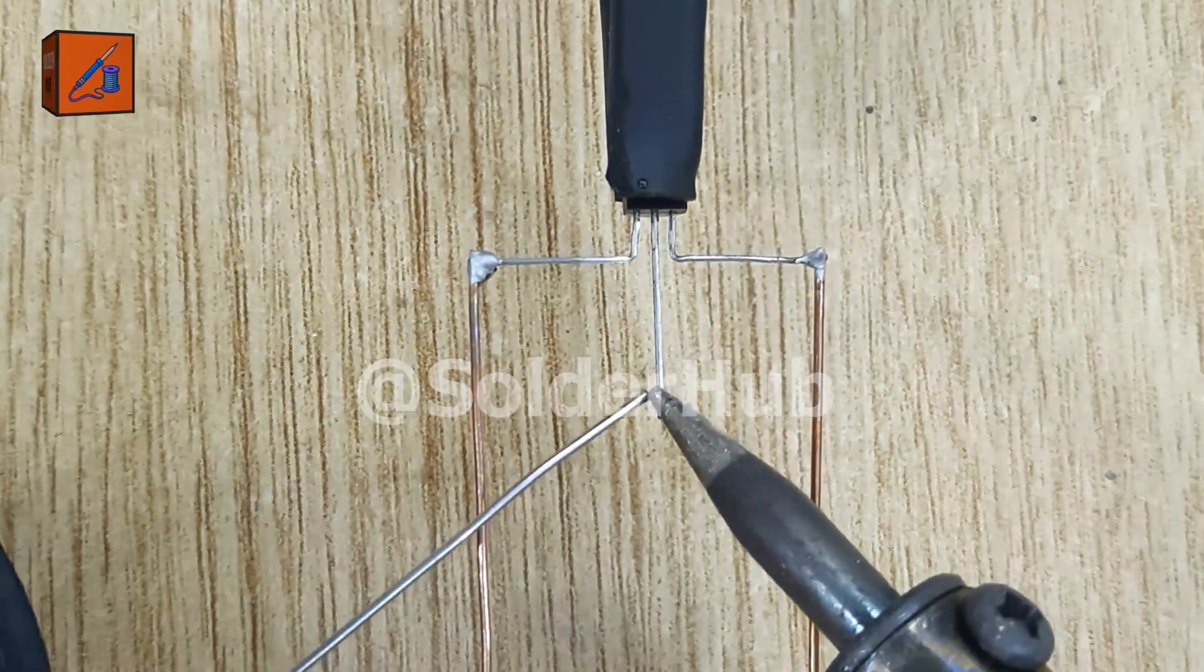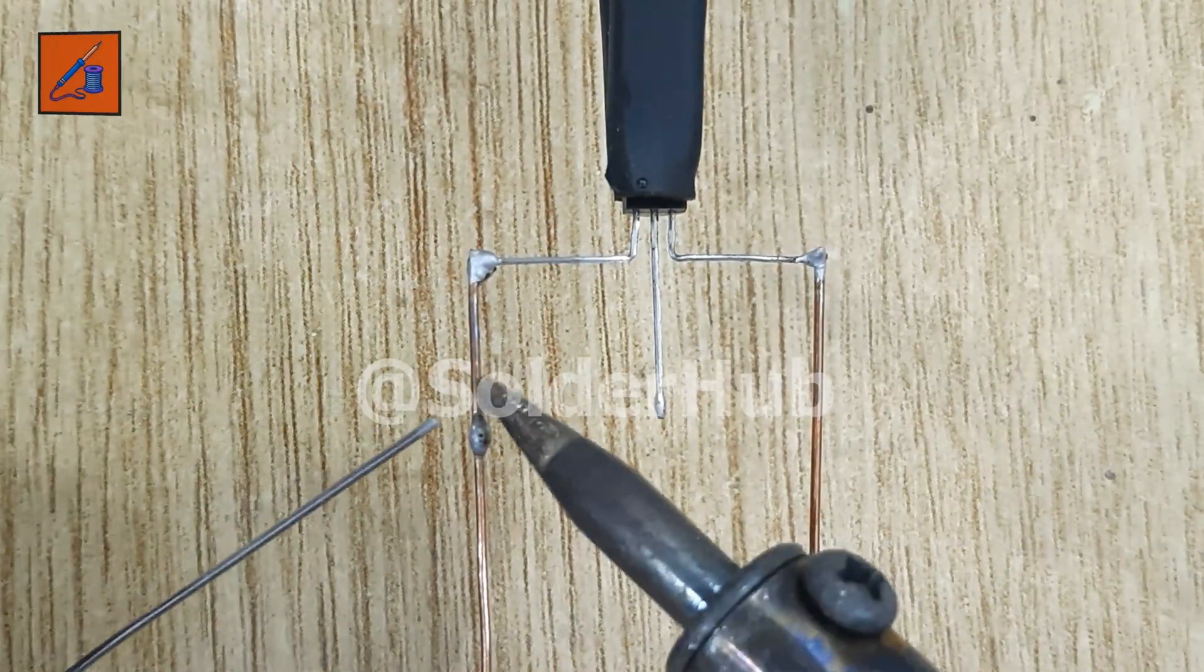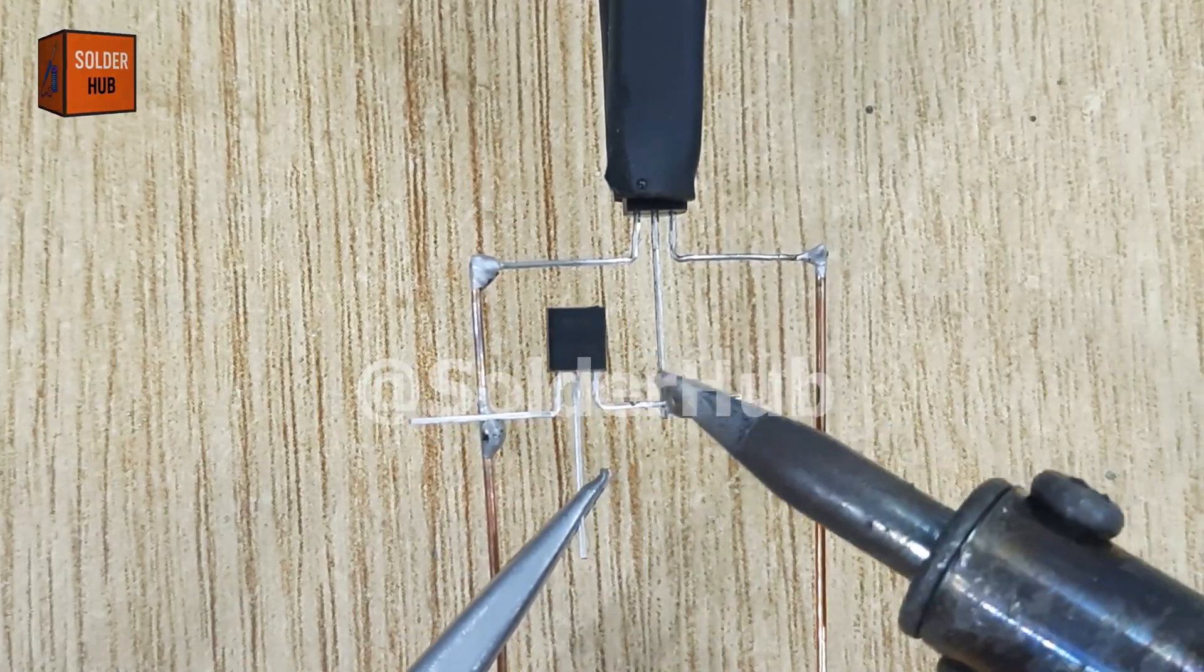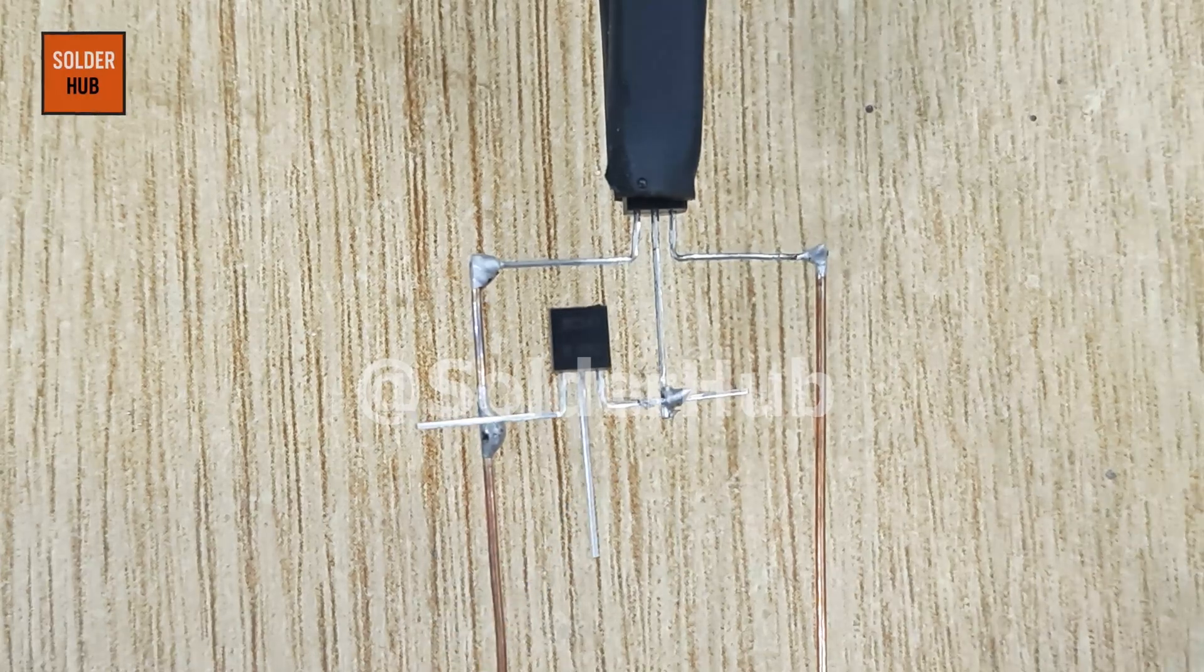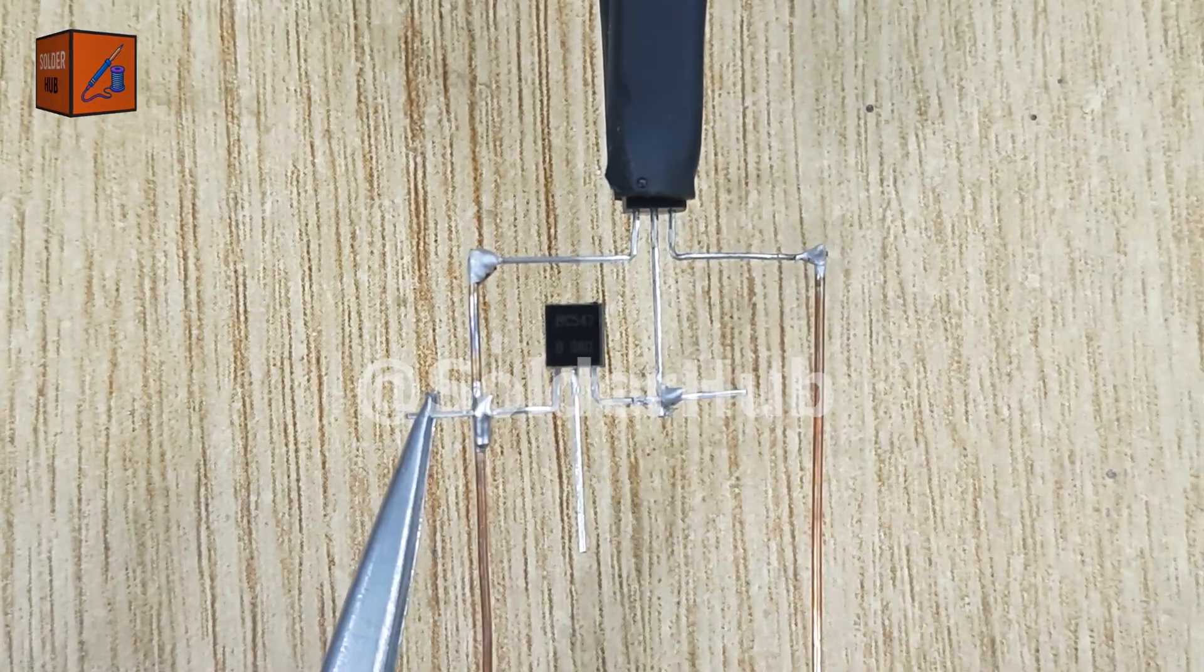Now, I'll apply some solder on the base pin and on one of the copper wires. This will prepare the circuit for the second transistor. Here comes another BC547 transistor. I'll solder its emitter pin directly to the base of the first transistor and its collector pin to the copper wire connected to the collector of the first transistor.